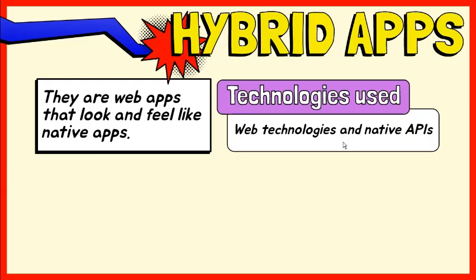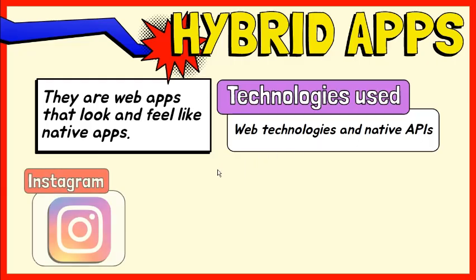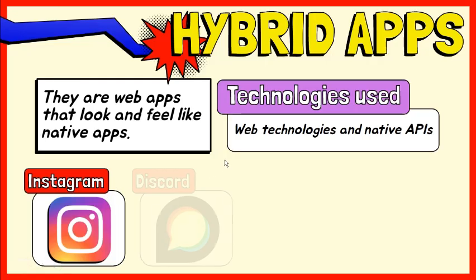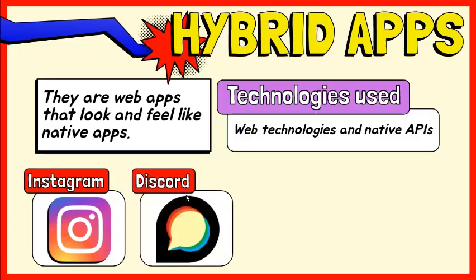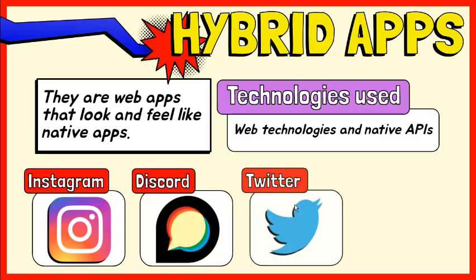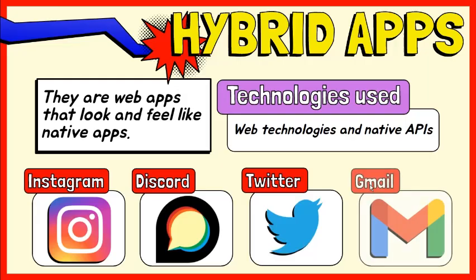Here are some examples of hybrid apps: Instagram, which started as a native app but when acquired by Facebook was rewritten using the hybrid app coding language; the popular chat network for gamers, Discord; the social media giant Twitter; and the new version of Gmail that uses both native and HTML elements.